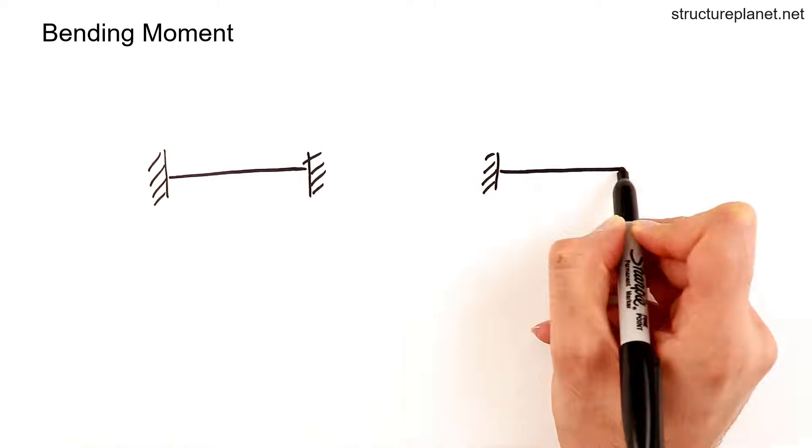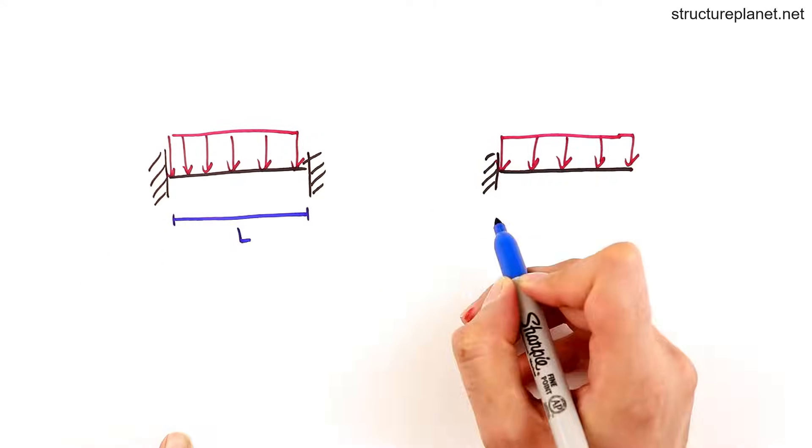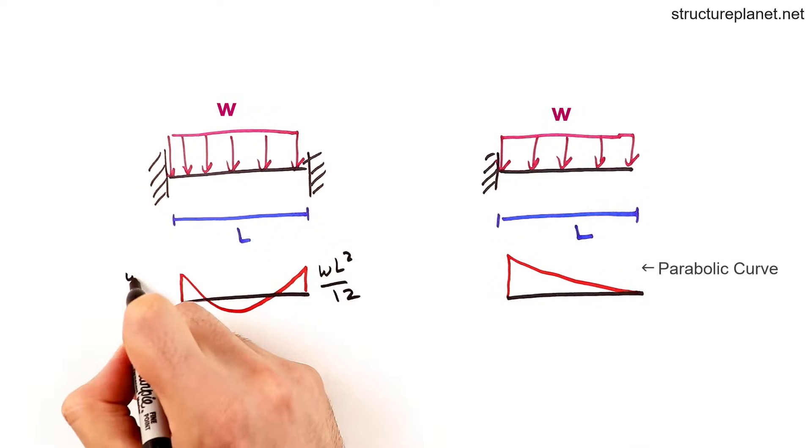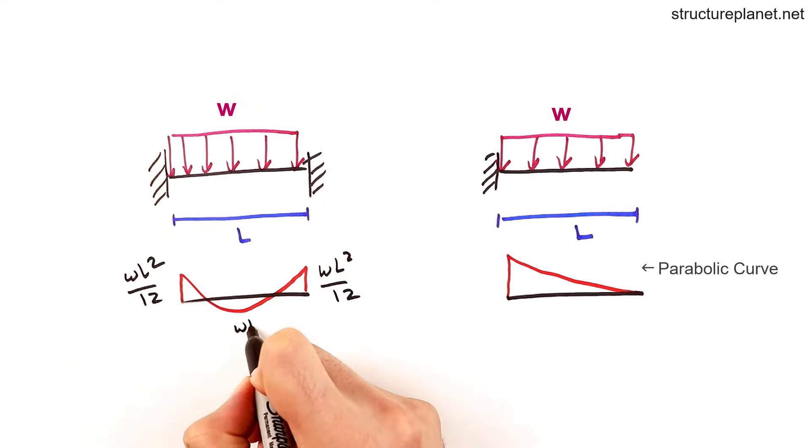Cantilevers need a bigger section to resist the bending too. Using the previous example, a cantilever will have six times more moment at its end support compared to a beam which has fixity at both ends.